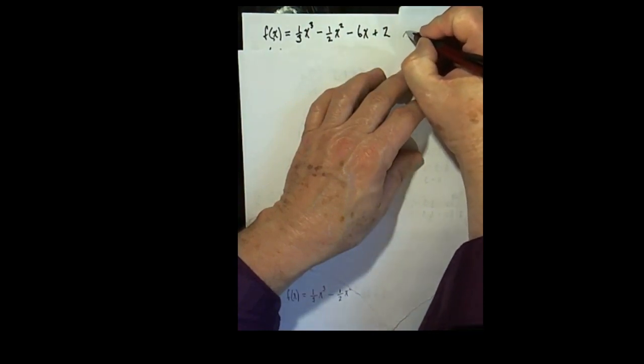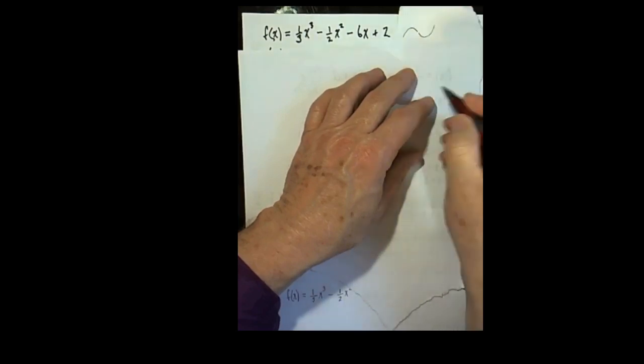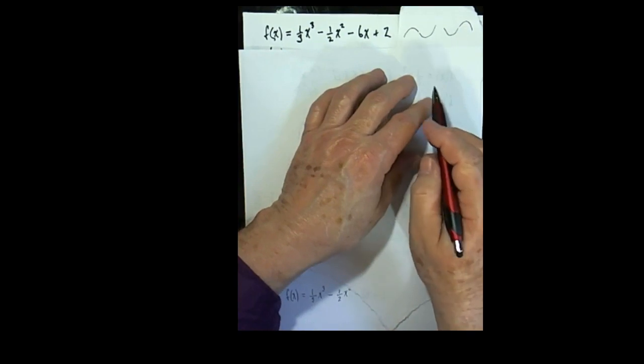So there might be a bend here, and then a second bend like that. Or, it could be the first bend could be like this, and the second bend could be like that. This graph will essentially have one of those two shapes.